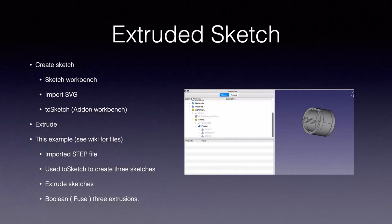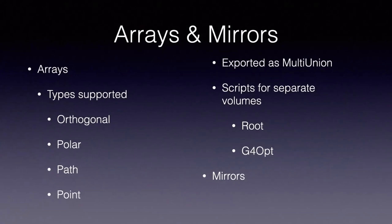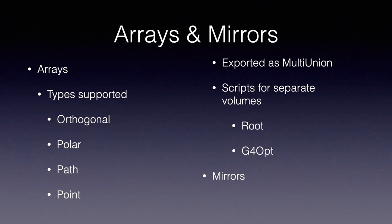This is another example of the use of extruded sketches. What you have here is an imported step file, and using the two-sketch add-on workbench, three sketches have been created at various cross-sections. These have then been extruded, and then the extrusions have been fused together in Boolean, and that's created the final object. Munther, with a lot of experience of Geant4 from his time at Lockheed Martin, realized that implementing arrays of GDML objects would be an extremely useful facility, and this is what he has done. They are exported as a multi-union, which means they are that much more efficient.